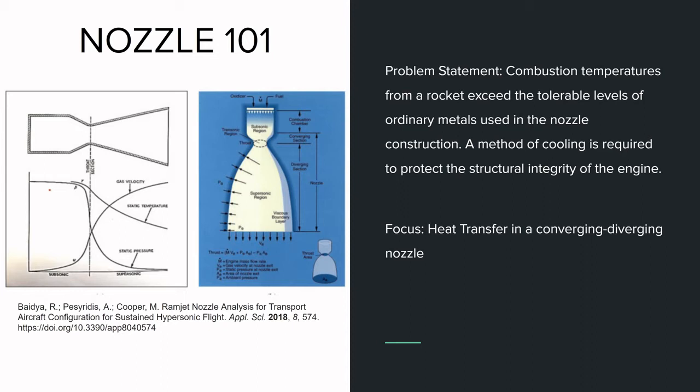we can see that the nozzle will experience extreme temperatures at the inlet and the throat, while the temperature drops throughout the diverging section of the nozzle. Even with a temperature drop, ordinary metals cannot withstand temperatures a nozzle will experience. With that, engineers have developed methods of cooling the nozzle and have averted catastrophic failure.